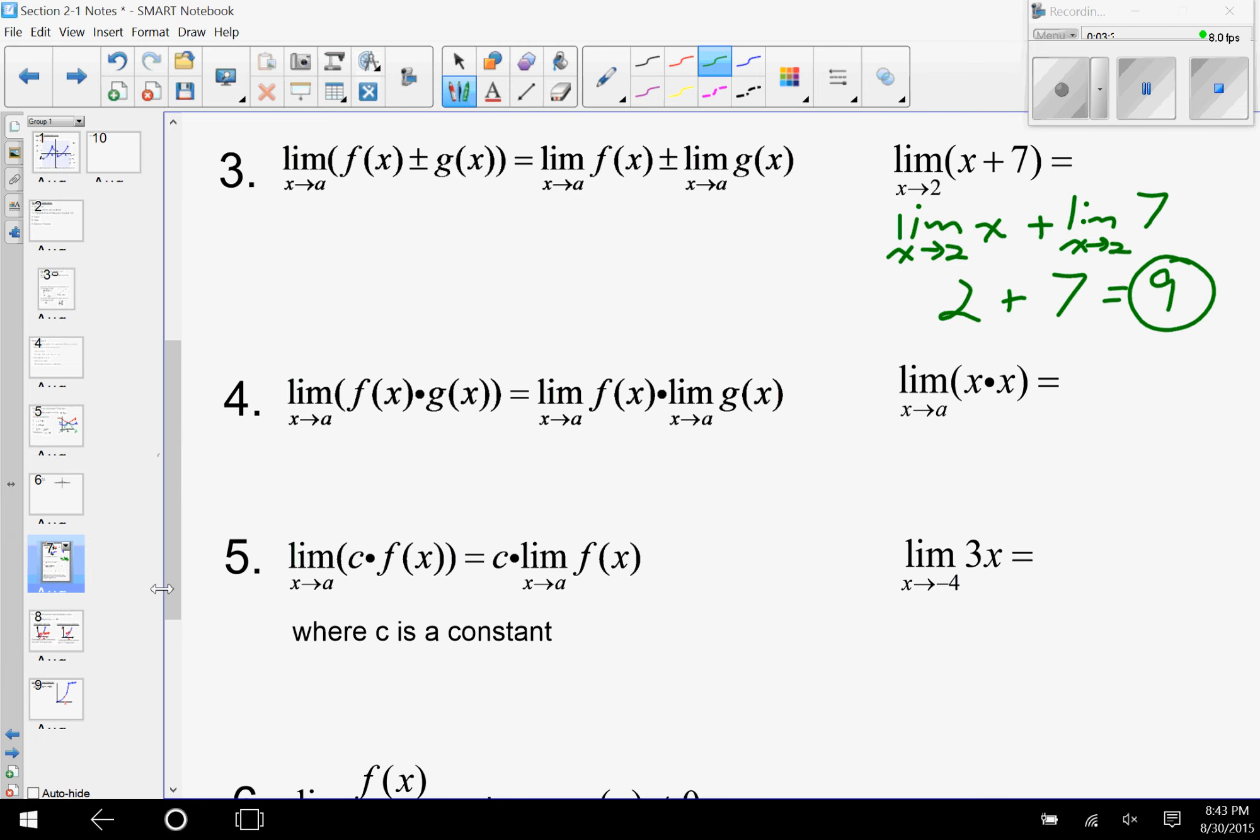Similarly, with multiplication, if I'm taking the limit of a product, I can break that up and do the product of the limits of each piece. This is where being able to do substitution for limits involving powers really comes in. So the limit as x approaches a of x times x would be the limit as x approaches a of x times the limit as x approaches a of x.